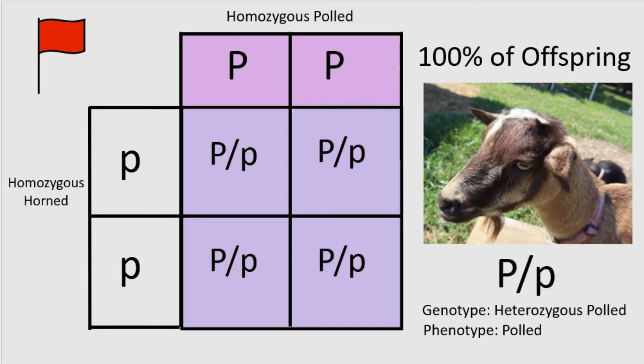The third pairing is a homozygous polled goat bred to a horned one. For those familiar with the relationship between polled-to-polled breedings and intersex goats, you will probably notice a red flag with this pairing — particularly the existence of a homozygous polled goat. A homozygous polled goat crossed with a horned one will give 100% polled offspring. These offspring will be heterozygous for the polled allele with a genotype of capital P slash lowercase p.